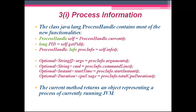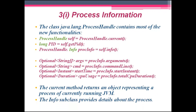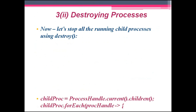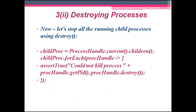The current() method returns an object representing the currently running JVM process. The info() method provides details about the process. To destroy processes, after creating the process we can stop all running child processes using the destroy method. For example: ProcessHandle childProcess = ProcessHandle.current().children(); then childProcess.forEach(ProcessHandle::destroy) will destroy all running child processes.